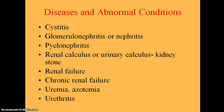Treatment for uremia involves restricting the diet, cardiac medications for blood pressure and cardiac problems, and dialysis until a kidney transplant can be obtained. Urethritis is an inflammation of the urethra, usually caused by bacteria but also possibly by viruses or chemicals like bubble bath solutions. It is more common in males than females. Symptoms include difficult or frequent painful urination, redness and itching at the urinary meatus, and purulent discharge. Treatment includes warm moist compresses, antibiotics, sitz baths, and increased fluid intake. Generally, females get cystitis more frequently while males get urethritis more frequently.